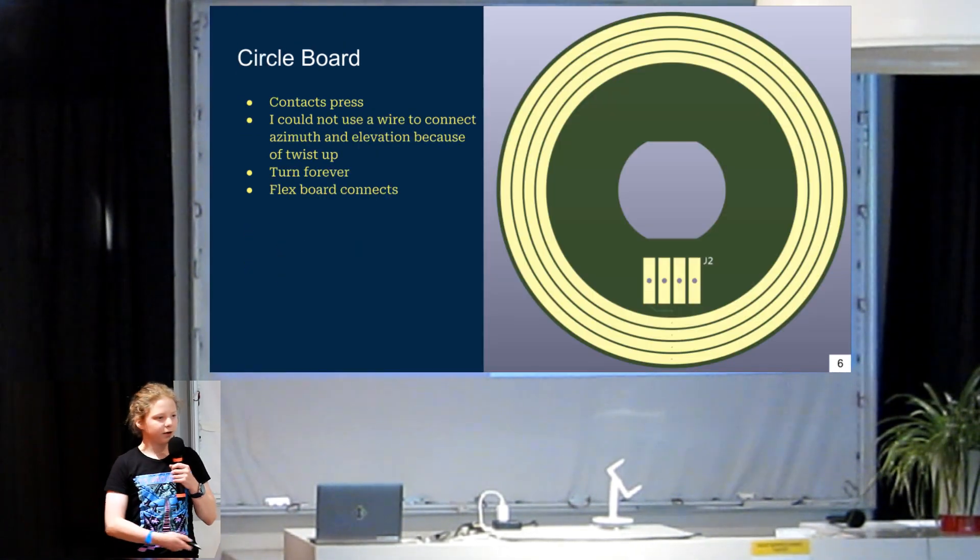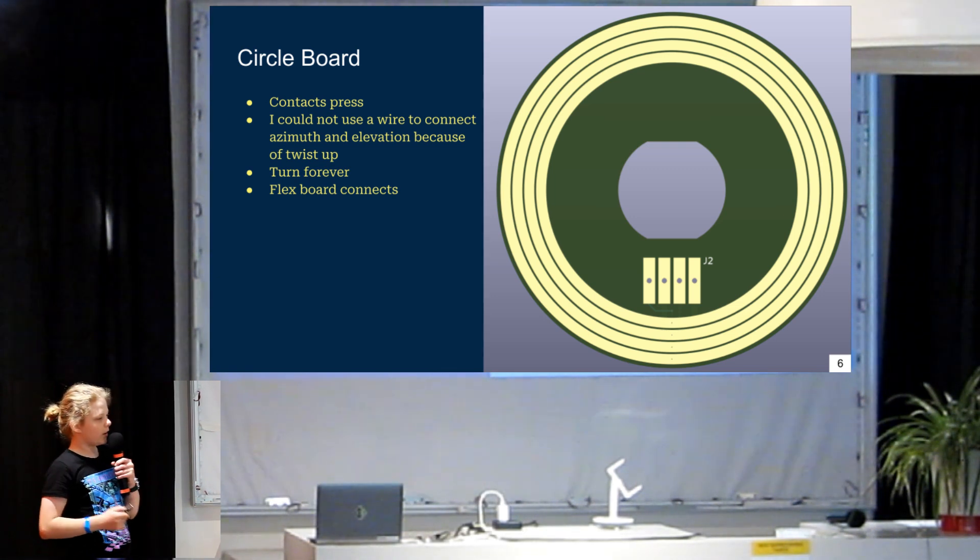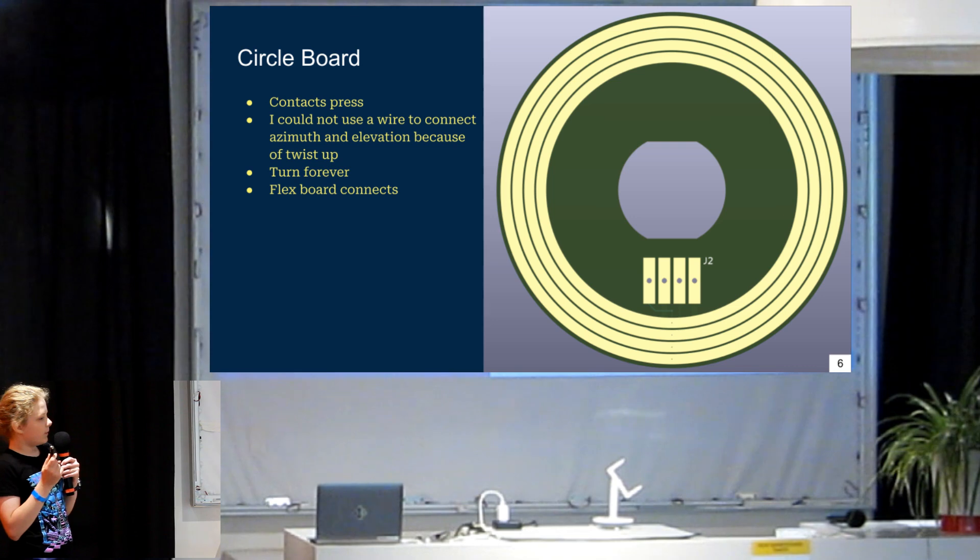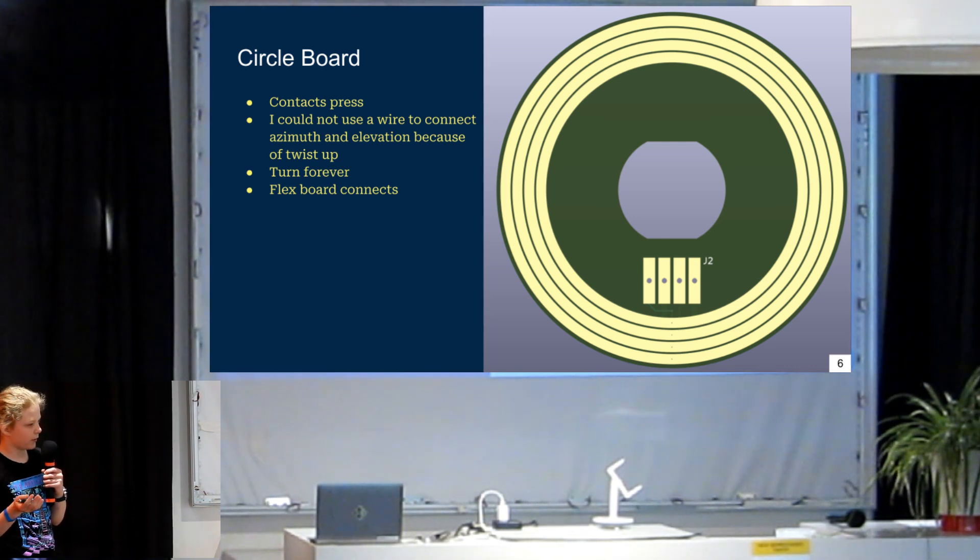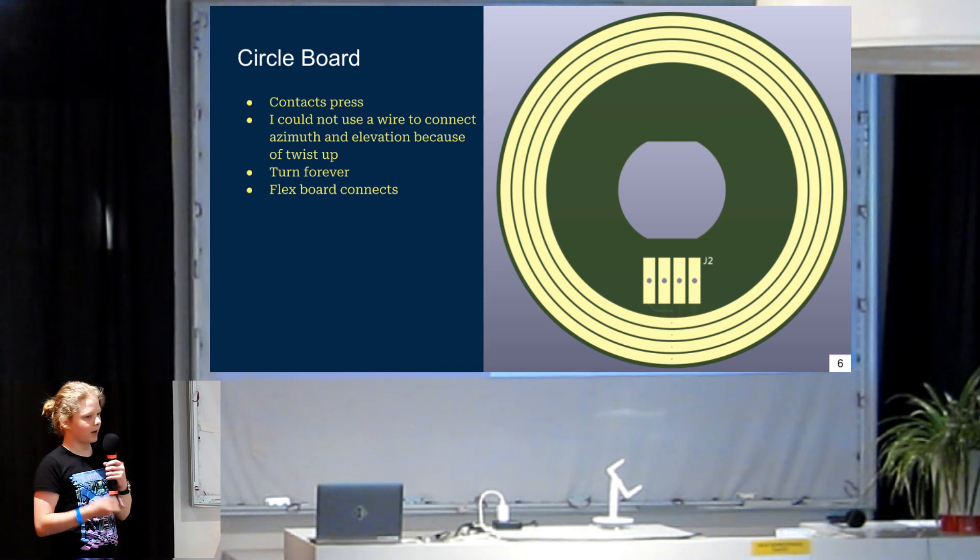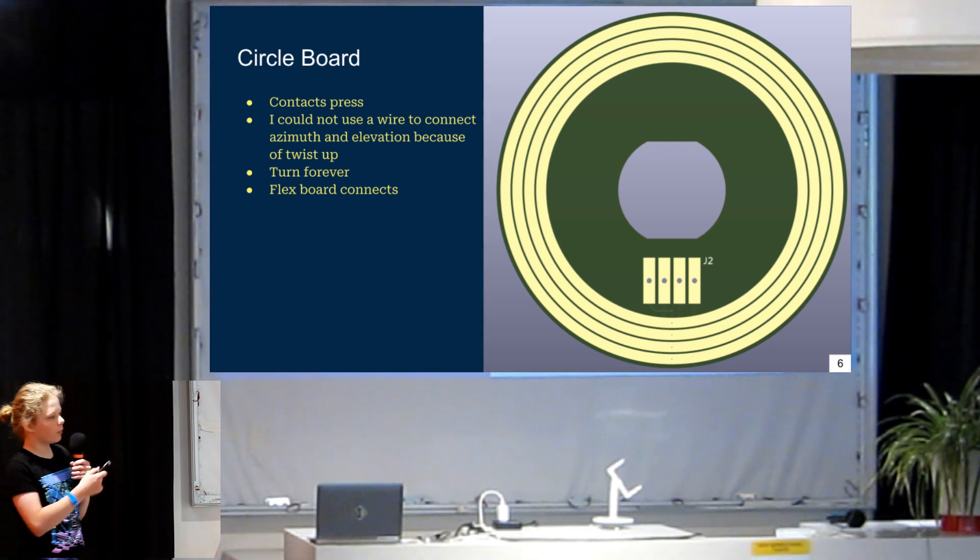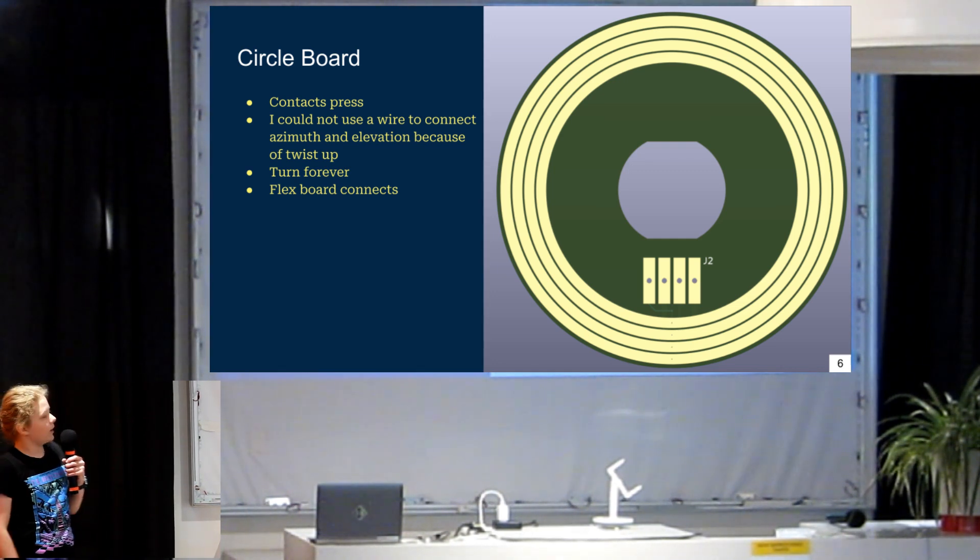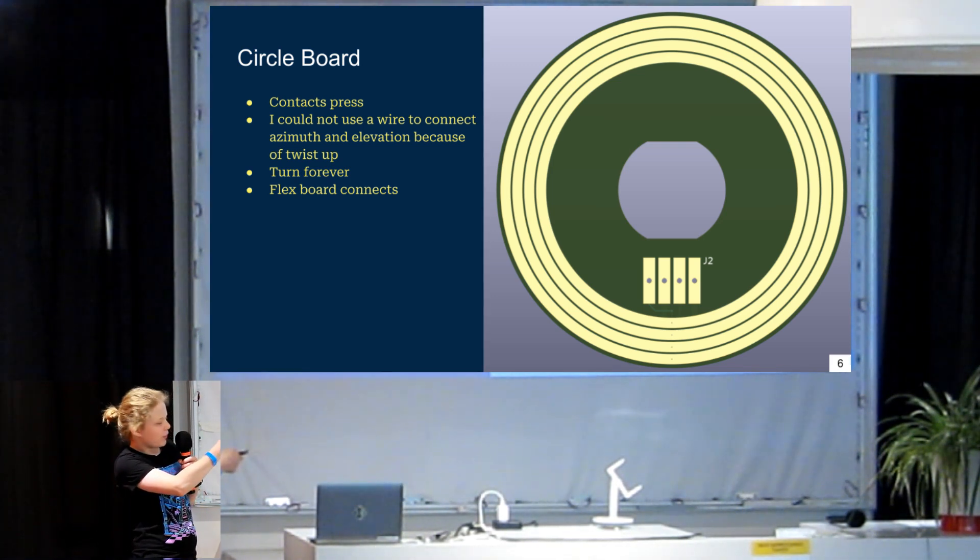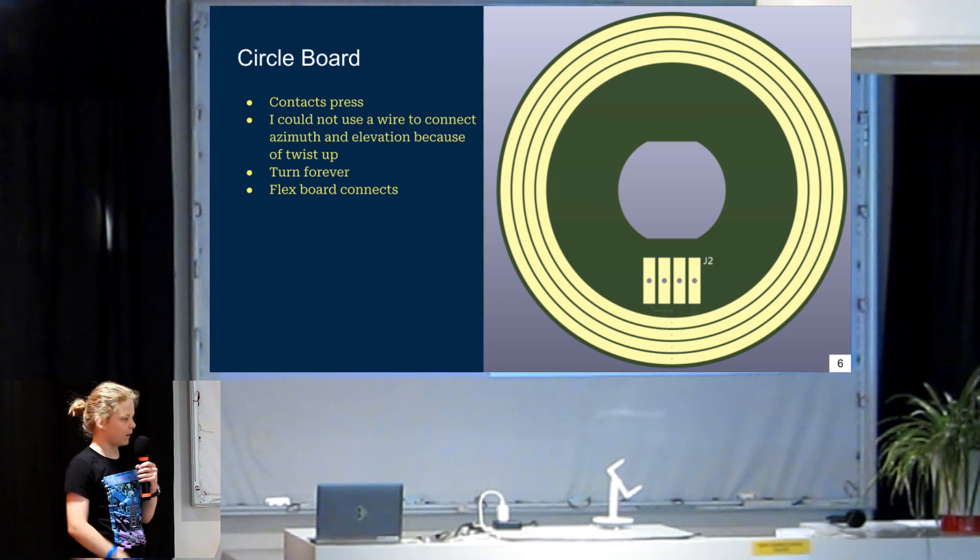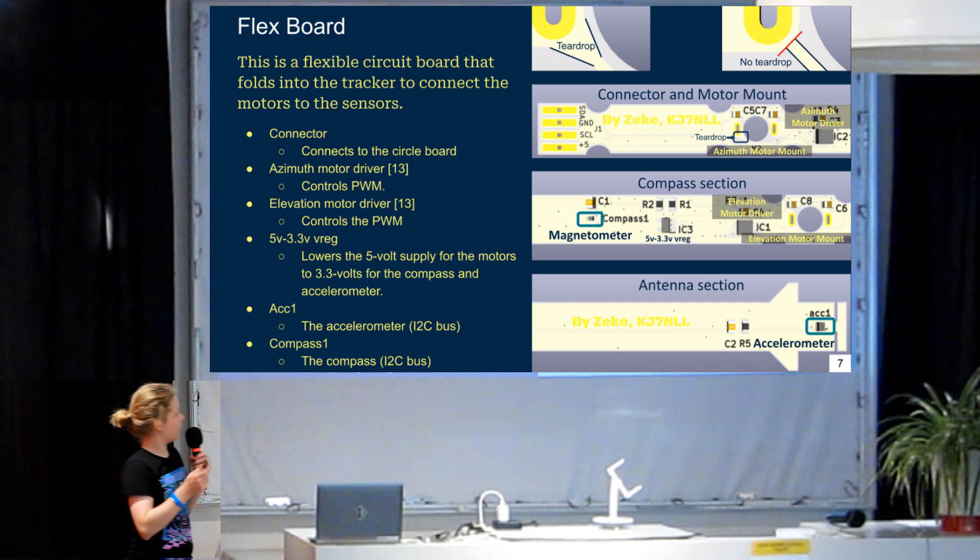So, here's the circle board, and notice how the contacts each press onto one of those four rings. And so, the reason for the circle board is it's basically a slip ring. And if we did not have a slip ring, and I just used a wire, the wire would twist all up. So, the circle board allows it to spin forever. And the flex board connects into a FPC connector, and it just shoves right in there. And that is how we get power to the flex board.